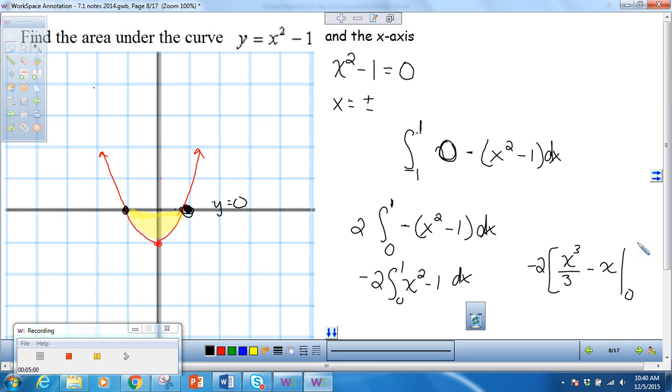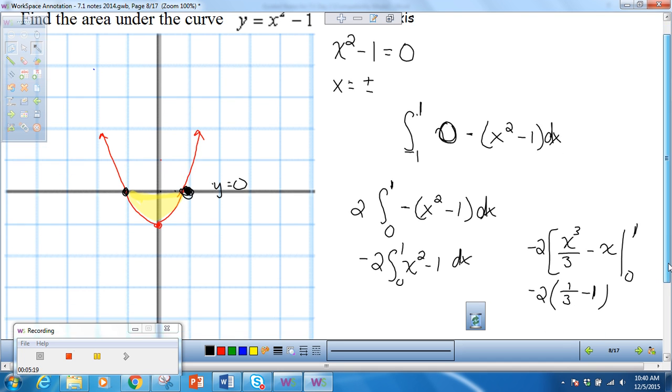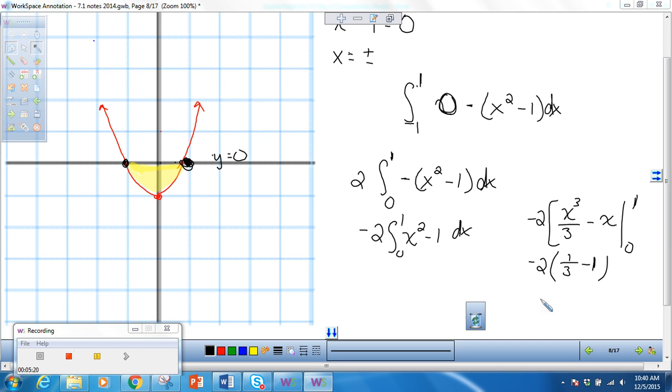And that gives us negative 2 times X cubed over 3 minus X. And we're integrating from 0 to 1. So that gives me 1 third minus 1. Notice by going from 0 to 1, that made my life a little easier because now I don't have to evaluate negative 1 because at 0, this whole thing is 0. So 1 third minus negative 1 is negative 2 thirds. So I have negative 2 times negative 2 thirds, which is 4 thirds. And that's my answer.